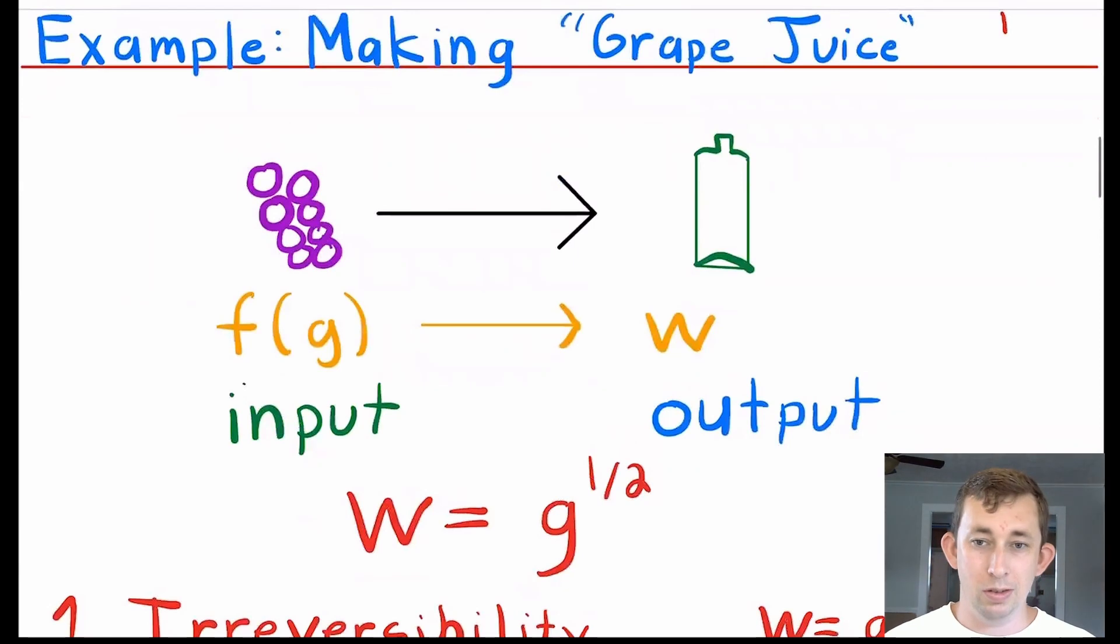The example we're going to use is making grape juice for no particular reason, where our input or our function is going to be with respect to grapes or G, and we're going to get this bottle, which we're going to call W. The production function is going to be specifically W equals the square root of grapes.